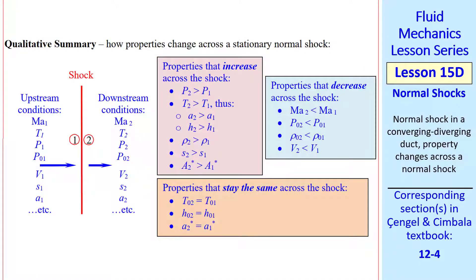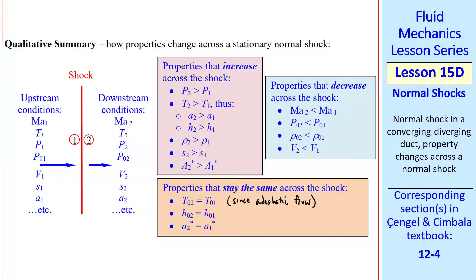Here's a qualitative summary of how properties change across a stationary normal shock. Properties that increase across the shock include: pressure, temperature, therefore speed of sound and specific enthalpy, density, specific entropy, and the sonic area. Properties that decrease include: Mach number — since Mach number one is supersonic and Mach number two is subsonic — stagnation pressure, stagnation density, and speed V. A few properties stay the same: stagnation temperature stays constant since we approximate this flow as adiabatic, and stagnation specific enthalpy also stays constant, since H equals CpT and H0 equals CpT0 for an ideal gas.